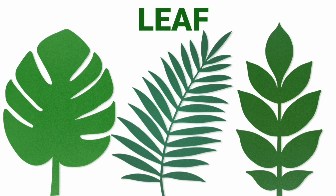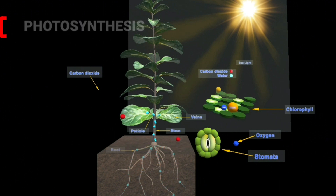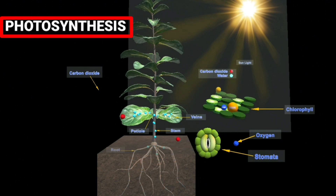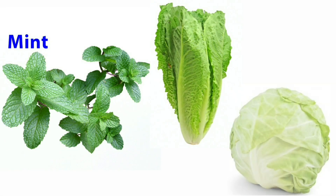Leaves make food for the plant with the help of air, water, chlorophyll — a green substance — and sunlight. This process is called photosynthesis. Therefore, the leaf is called the food factory of the plant. Food helps the plant to grow. Some plants such as mint, lettuce and cabbage store food in their leaves.